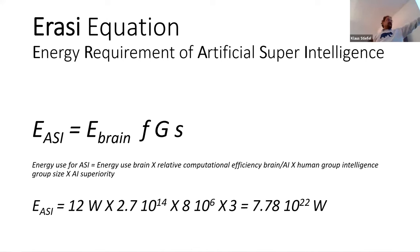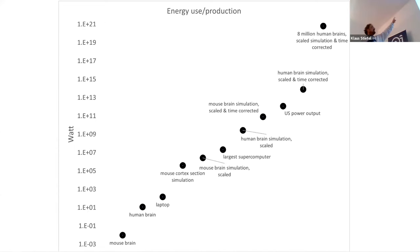So, then we get to, we get a value for our assumptions, which is about 7.8 times 10 to the 22 power of watt. How much is that? So, we made a little plot, of course. So, this is obviously a logarithmic plot. So, you know, here we have the human brain that's 20 watts.